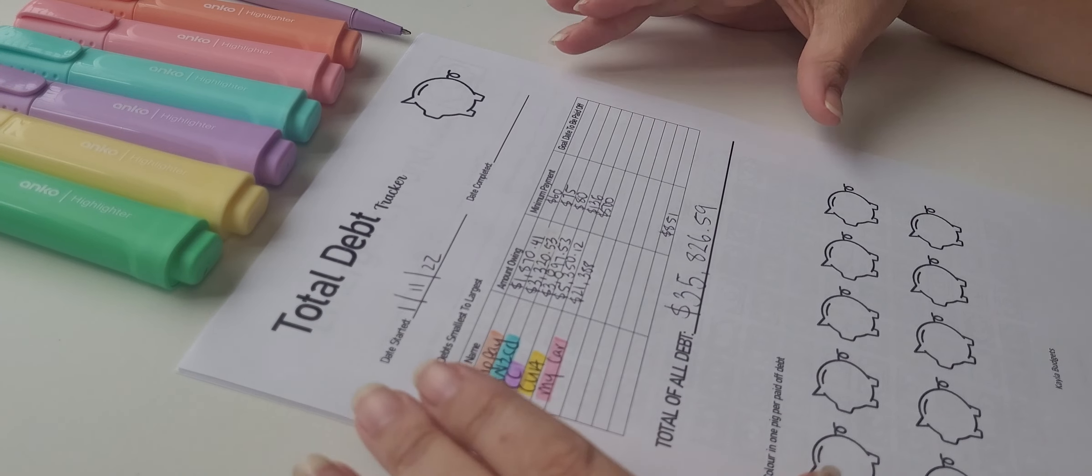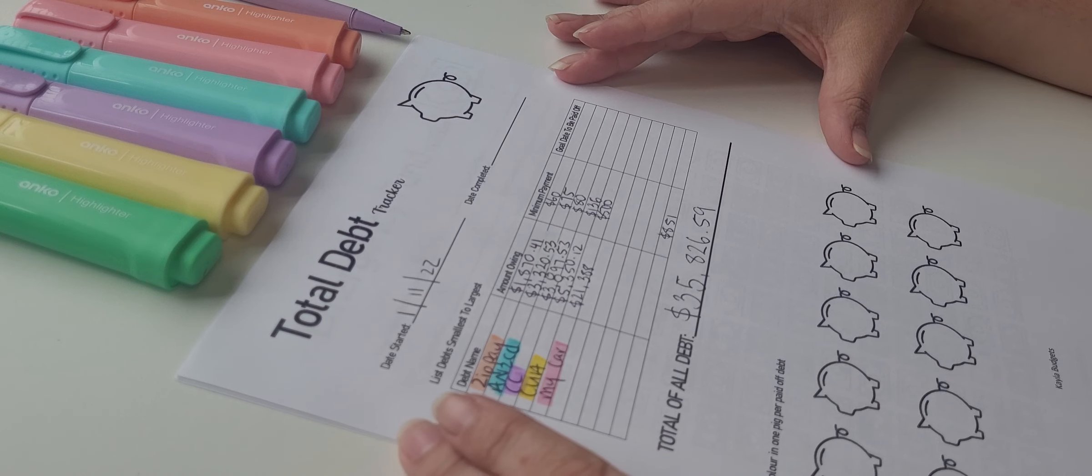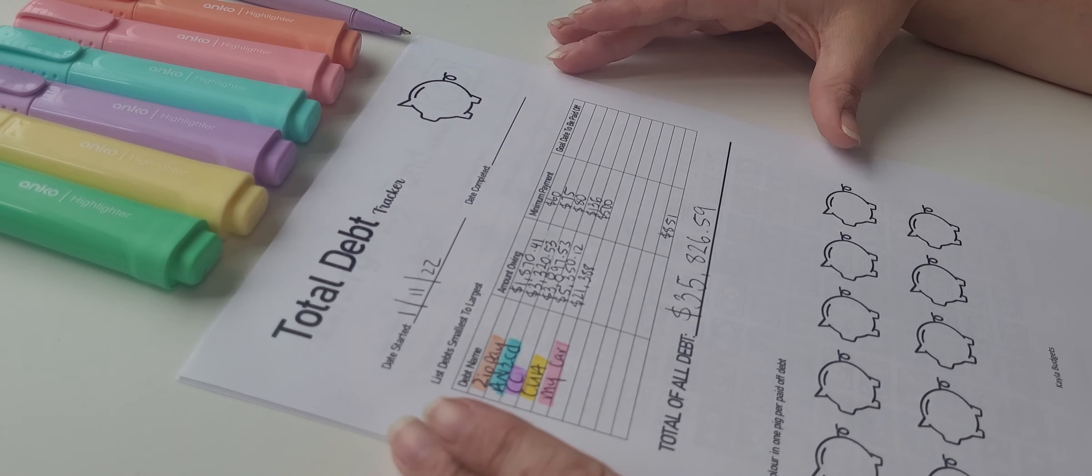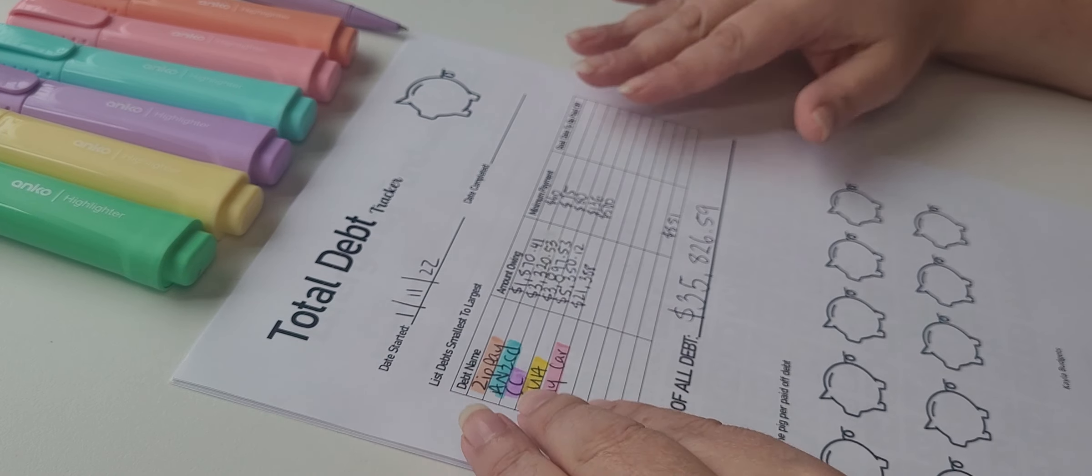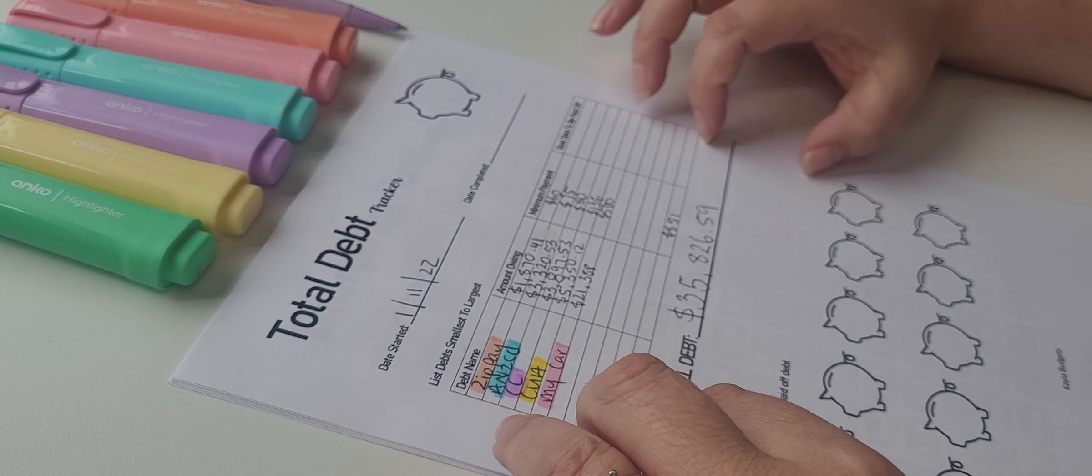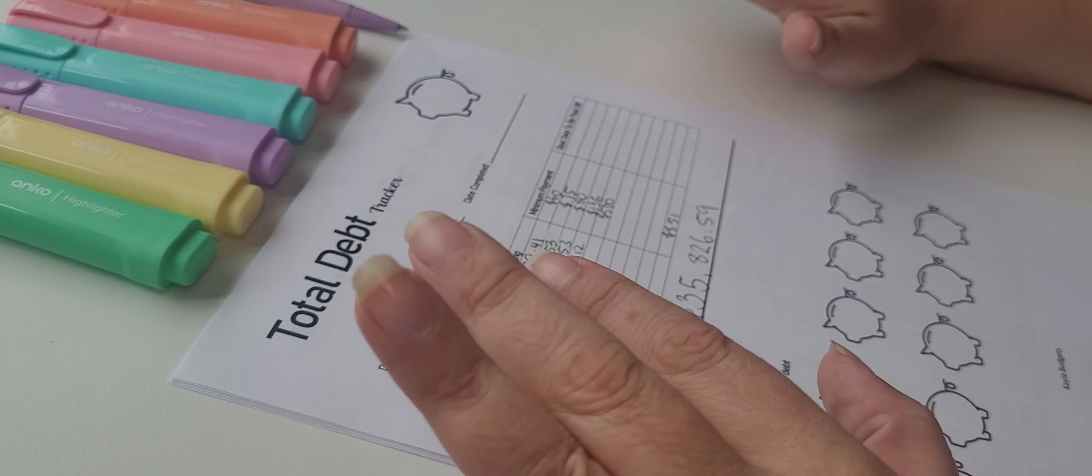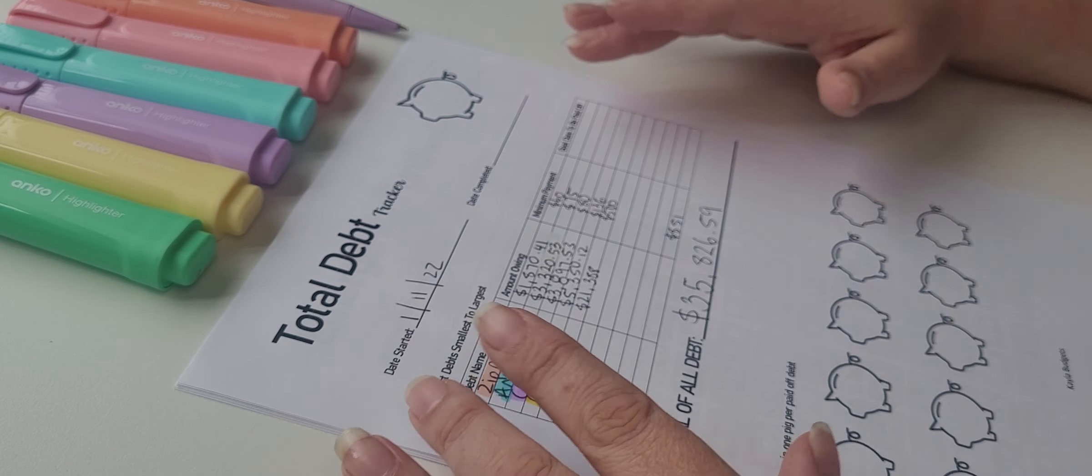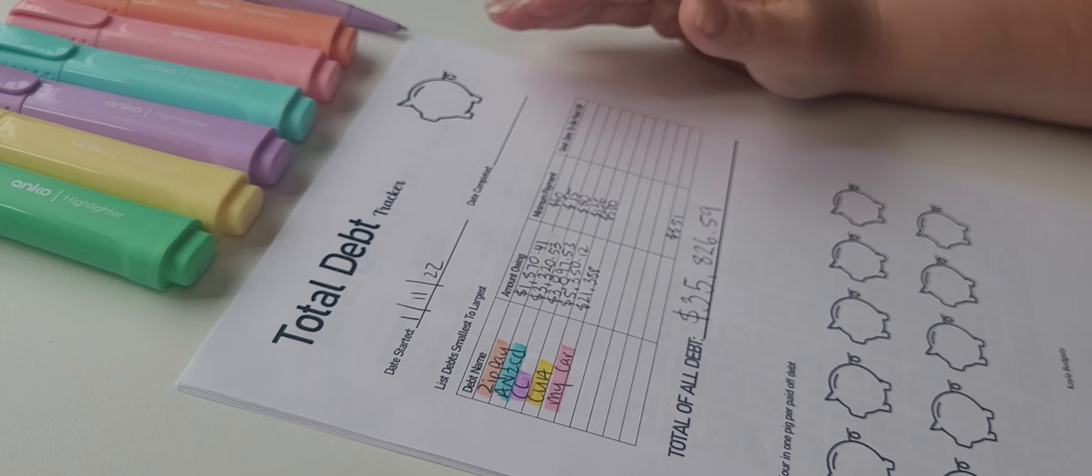This is our total. Shabam. Wowzers. $35,826.59. It stings. It stings a lot. Now I don't share, you guys, and this is why I'm anonymous, because I don't share details like this with anybody, me and my husband, and then that's it.